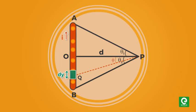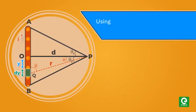Consider an element at point Q of length dy at a distance y from O and distance of this element from point P is R. The line joining P to Q makes an angle theta with the direction of current.